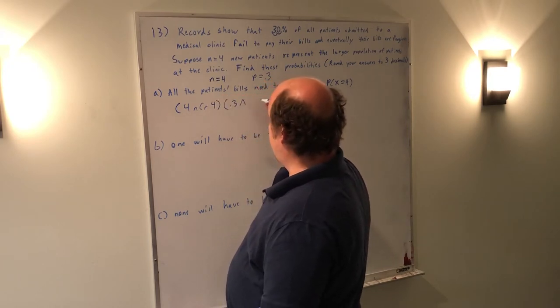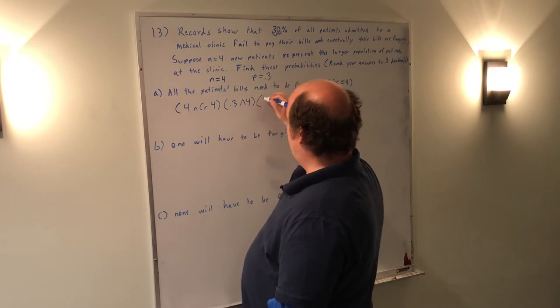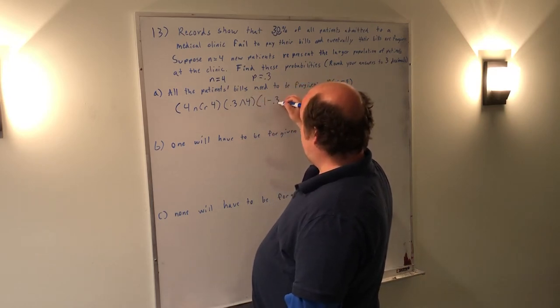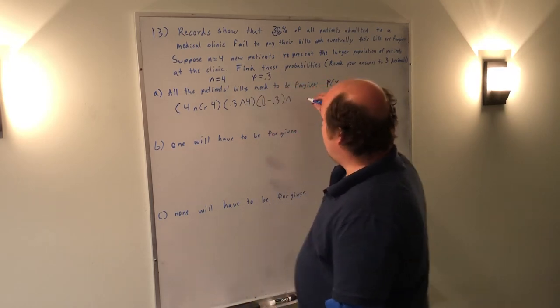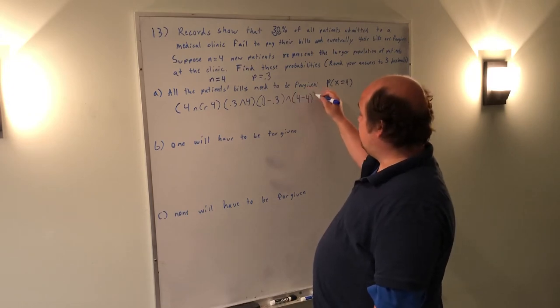P, 0.3 to the power of X, 4, times 1 minus P, 0.3, to the power of N minus X, 4 minus 4.